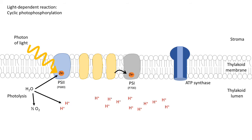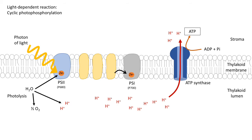So now the electrons are at photosystem 1. The key events now really follow. We've established the proton gradient that can be used to form ATP in this instance.